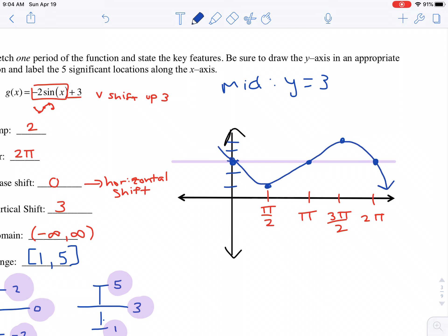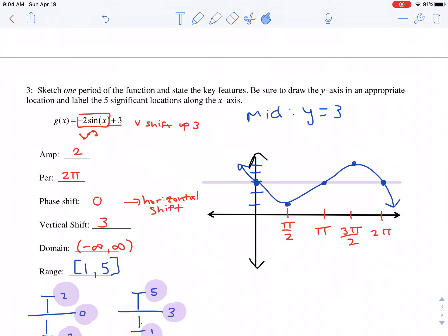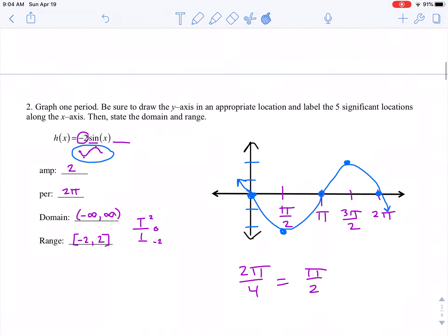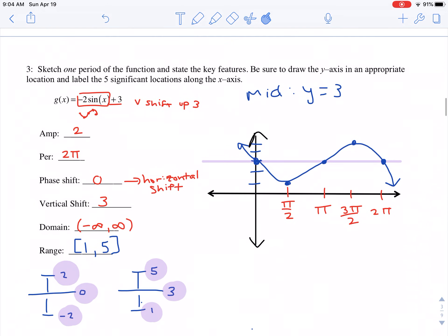So if we were to look at this graph compared to our other graph, see, here's this one. Here's this one. They're exactly the same graph, except everything is shifted up two in this new graph. Okay, and that are up three, sorry, because of the vertical shift up three.